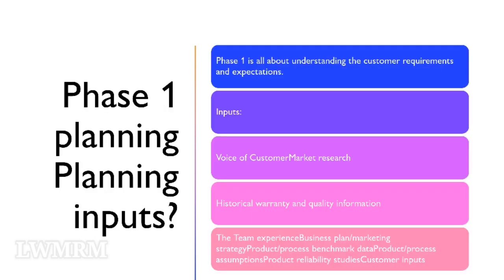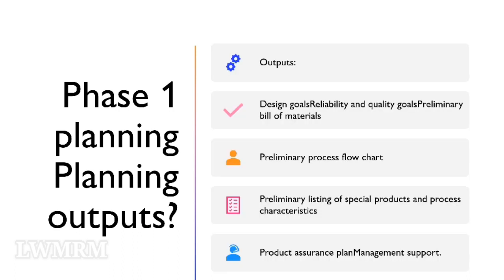Phase 1 is all about understanding the customer requirements and expectations. Phase 1 inputs: voice of customer; market research; historical warranty and quality information; team experience; business plan and marketing strategy; product and process benchmark data; product and process assumptions; product reliability studies; and customer inputs. Phase 1 outputs: design goals; reliability and quality goals; preliminary bill of materials; preliminary process flow chart; preliminary listing of special products and process characteristics; product assurance plan; and management support.